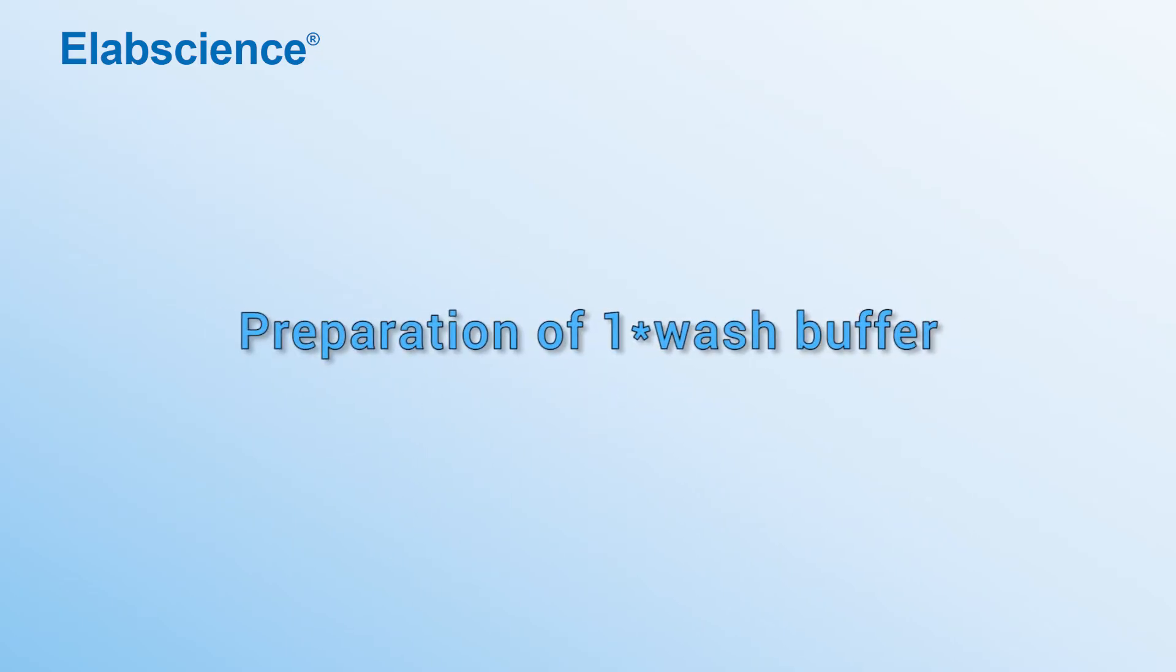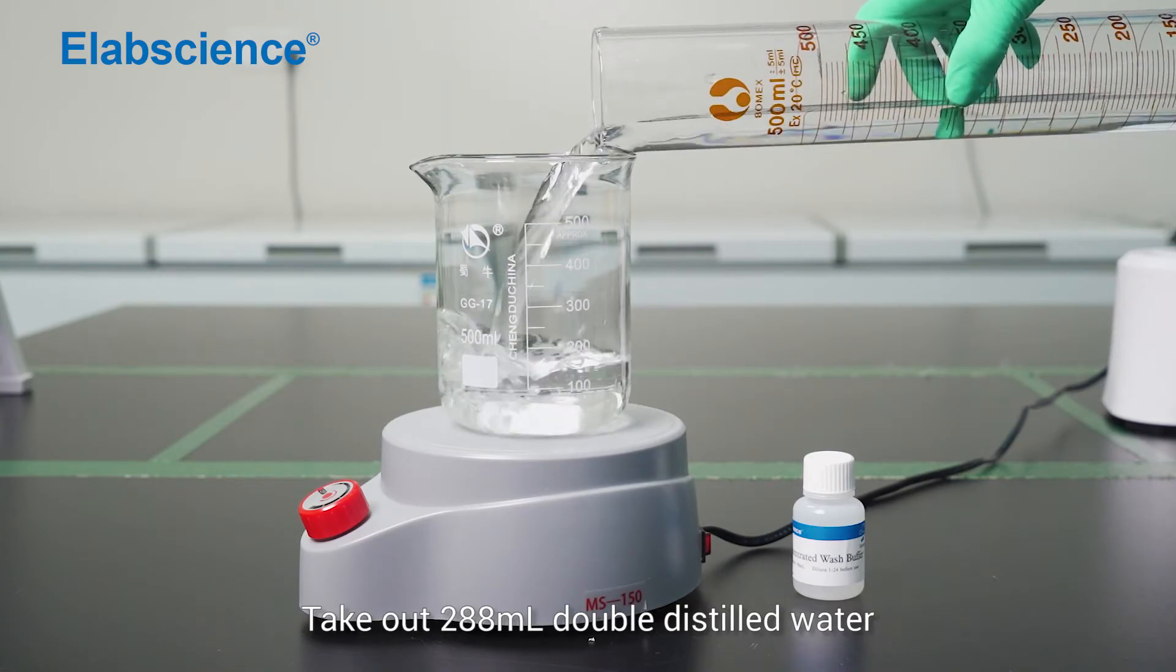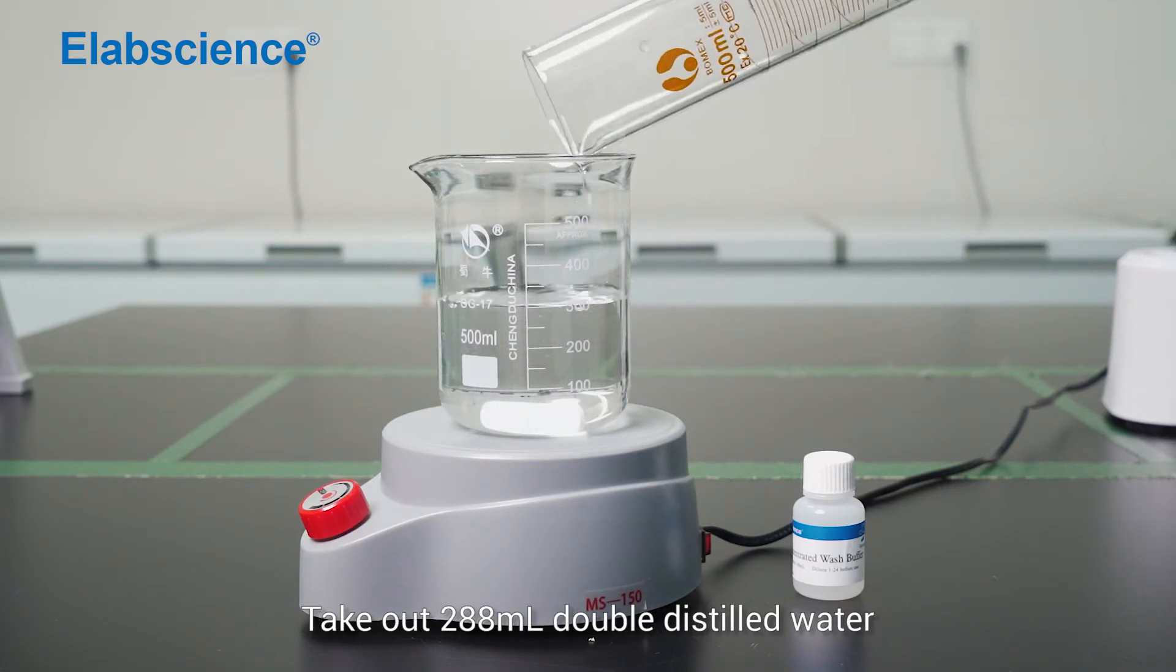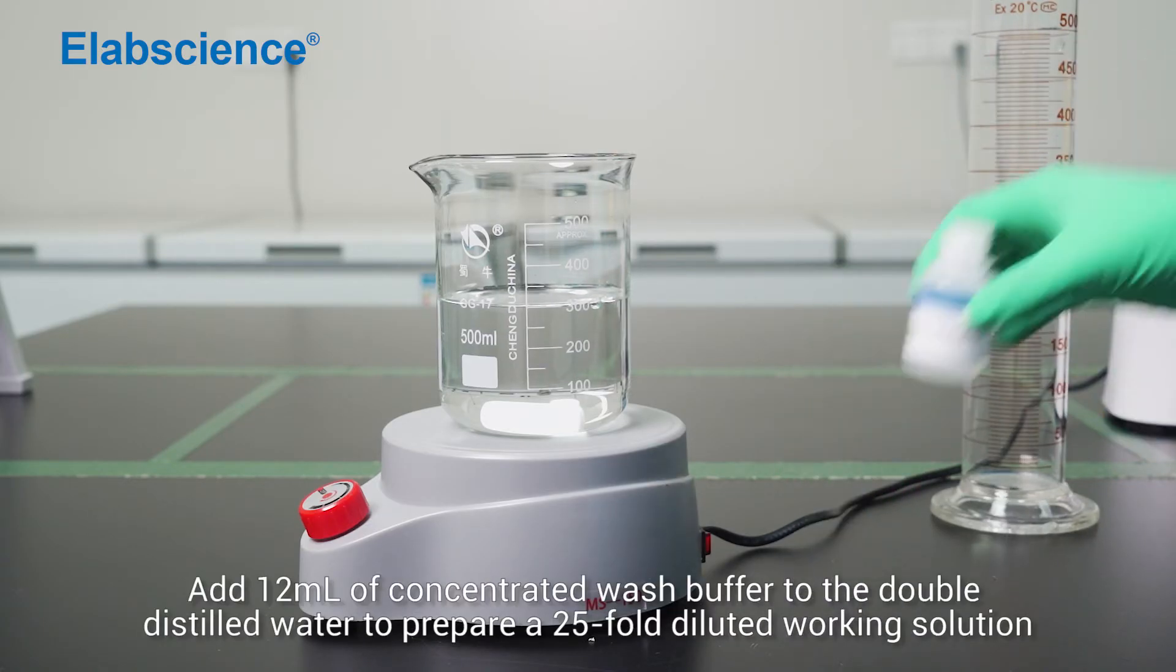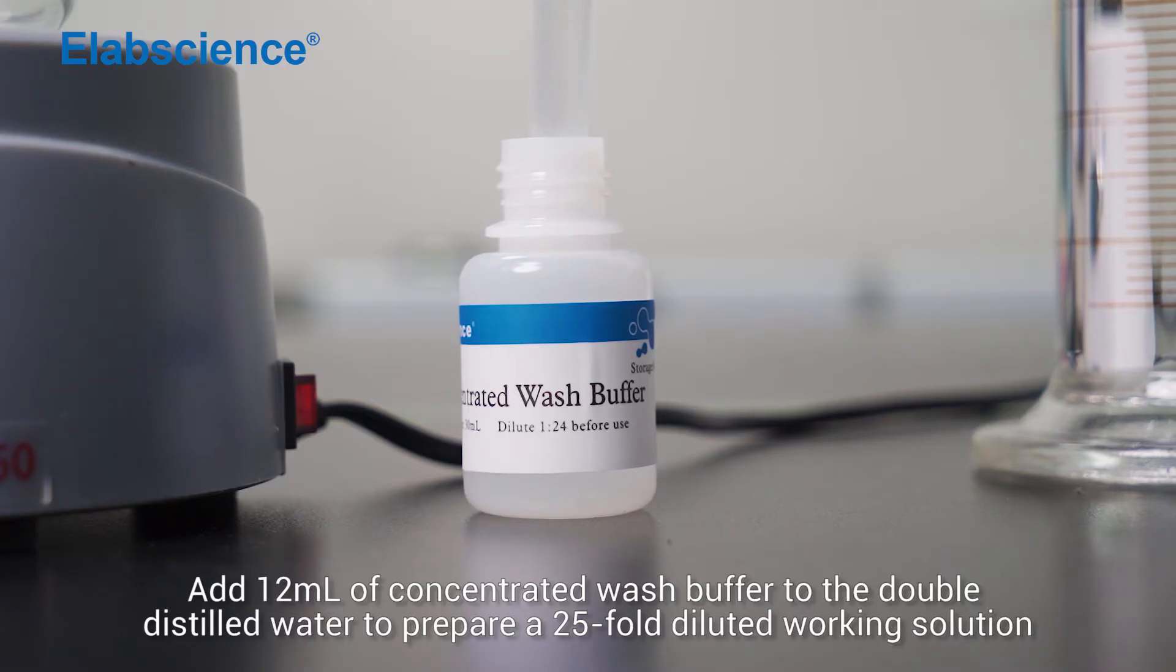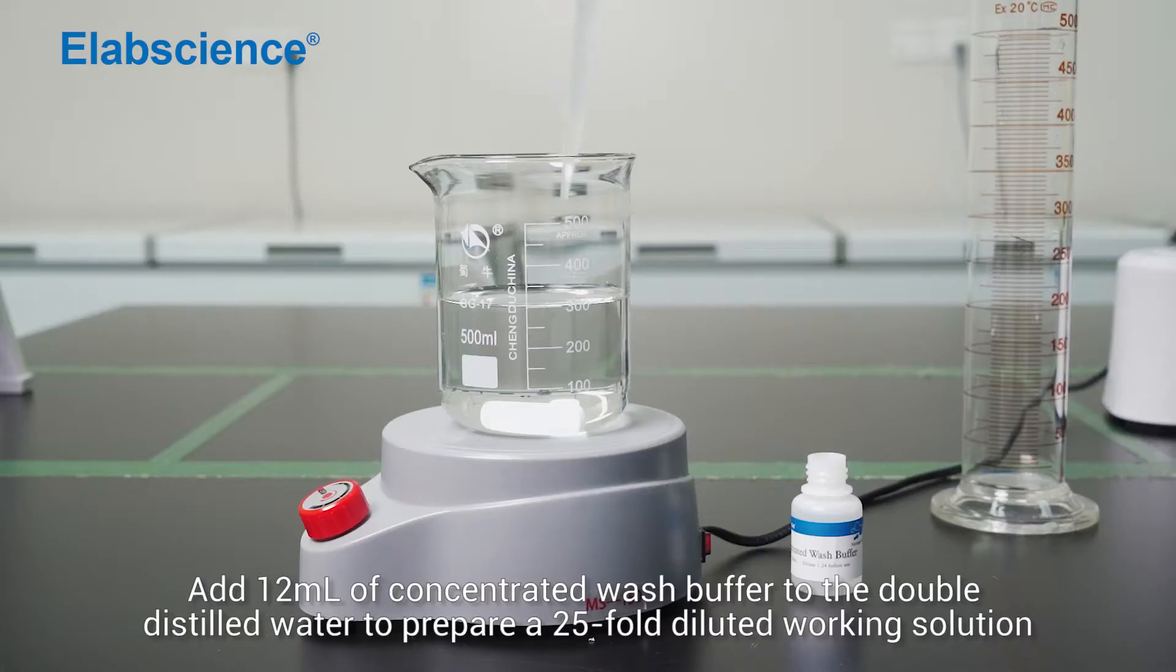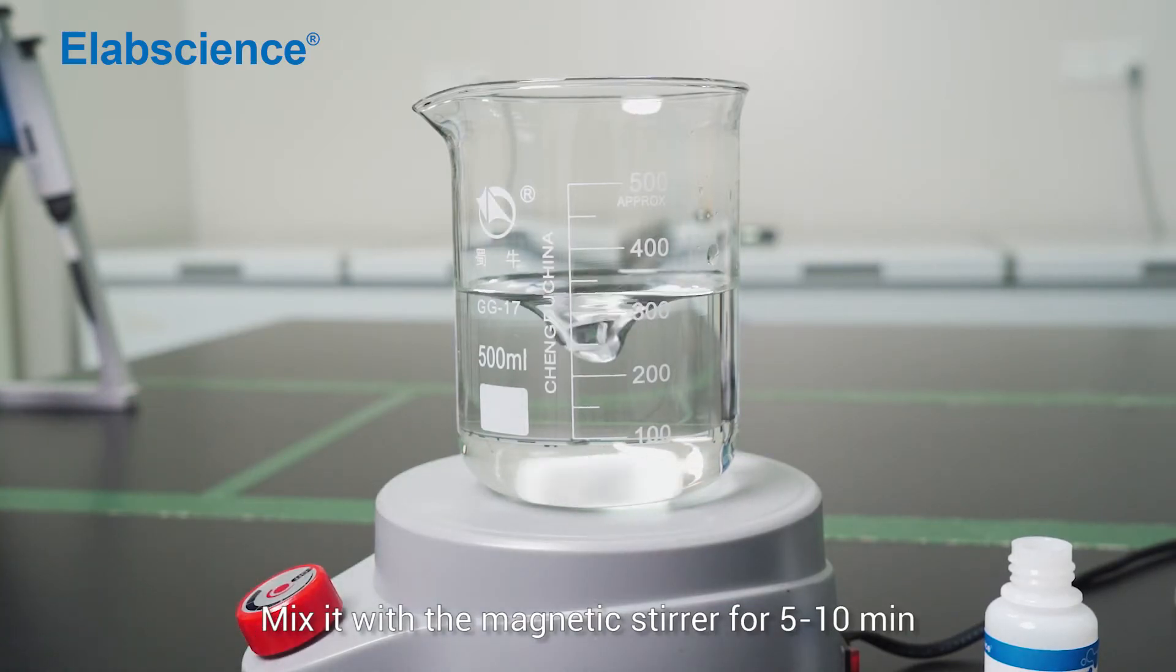Preparation of 1-time washing buffer. Take 288 ml of double-distilled water. Add 12 ml of concentrated washing buffer to the double-distilled water to prepare a 25-fold diluted working solution. Mix it with the magnetic stirrer for 5 to 10 minutes.